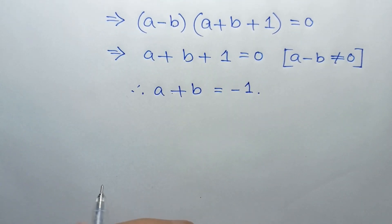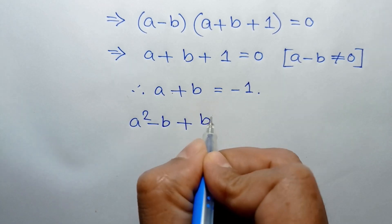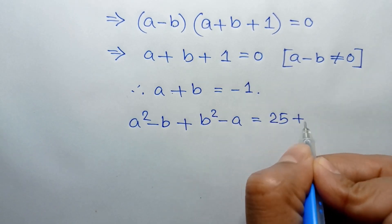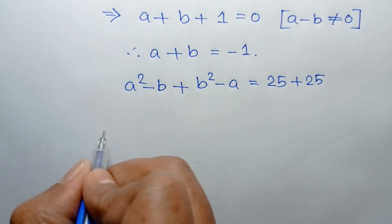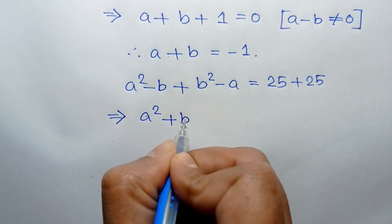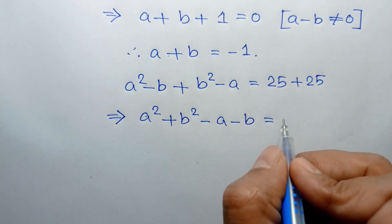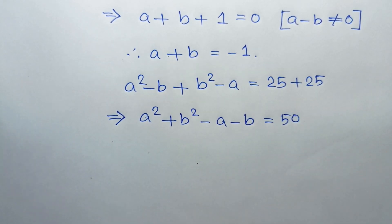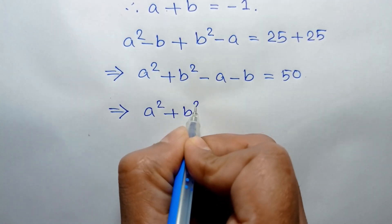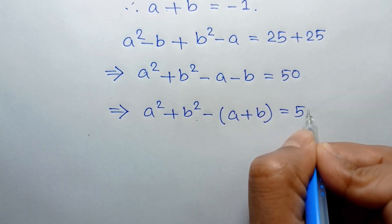Now adding equation 1 and equation 2, we can write A squared minus B plus B squared minus A is equal to 25 plus 25. Rearranging the left side, we get A squared plus B squared minus A minus B is equal to 50.